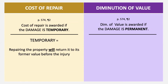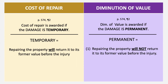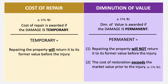Damage is temporary if repairing the property will return it to its former value before the injury, for both real and personal property. Permanent damage occurs when repairing the property will not return it to its former value — meaning cost of restoration is futile — or when the cost of restoration exceeds the market value prior to injury, meaning it would cost more to fix it than it's actually worth.